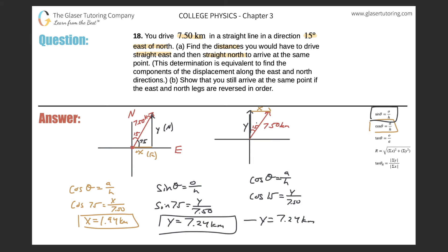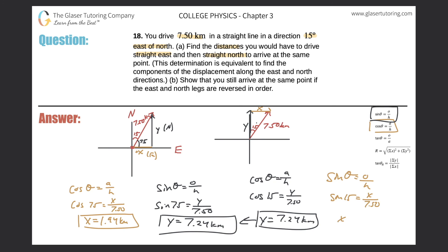Now solving for x: we know the hypotenuse and the angle, and we're looking for the opposite side — that's sine. Sine of 15 degrees equals x over 7.50. Calculating that gives 1.94 kilometers. So we've just proved it doesn't matter whether you go east first then north, or north first then east.